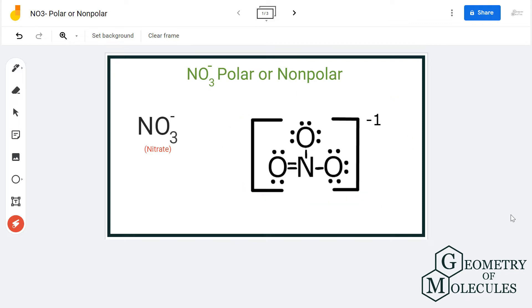If you look at NO3 minus ion, it has three oxygen atoms forming bonds with nitrogen atom. If you look at it, you might feel that it could be asymmetrical because there is a double bond here and there are single bonds here, but to confirm it further we will have to look at its 3D structure.